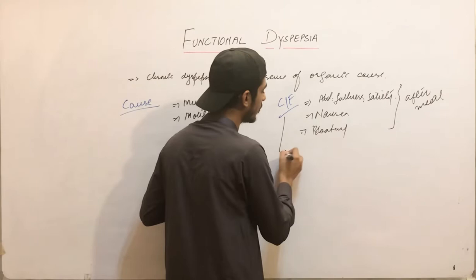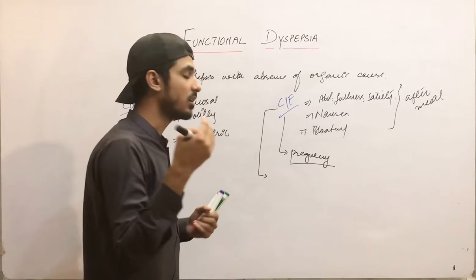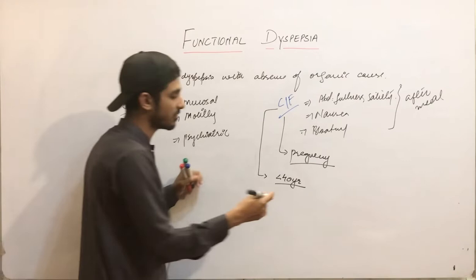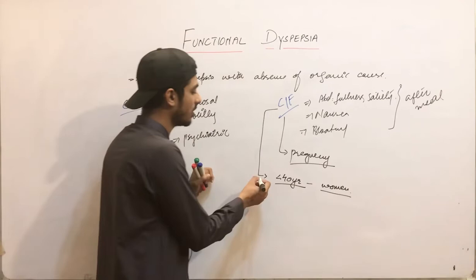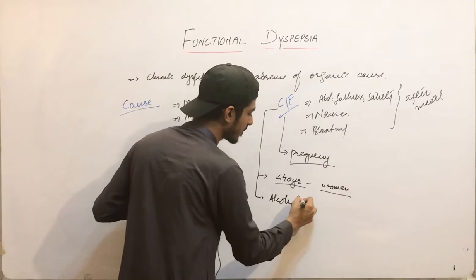First of all, if the patient is female, you have to rule out pregnancy. An important thing is that the age of the patient is less than 40 years in this case — they are young patients. Functional dyspepsia occurs in young patients and mostly in women, as women are more affected by functional dyspepsia. So you have to rule out pregnancy in any female patient presenting to you.